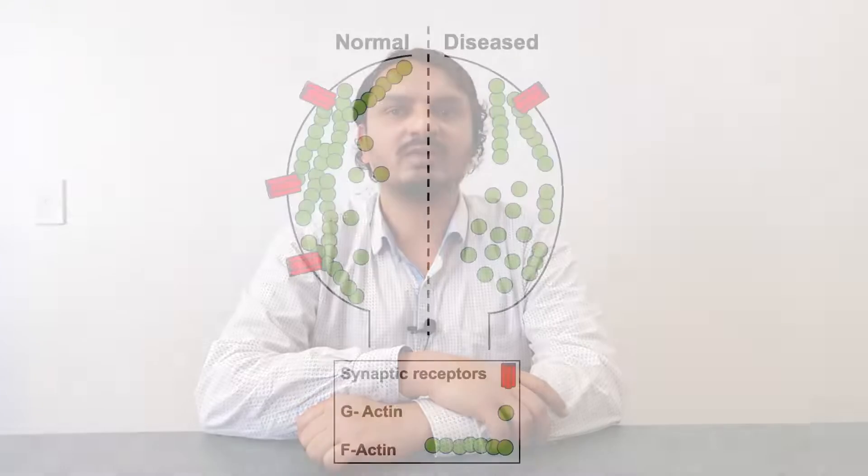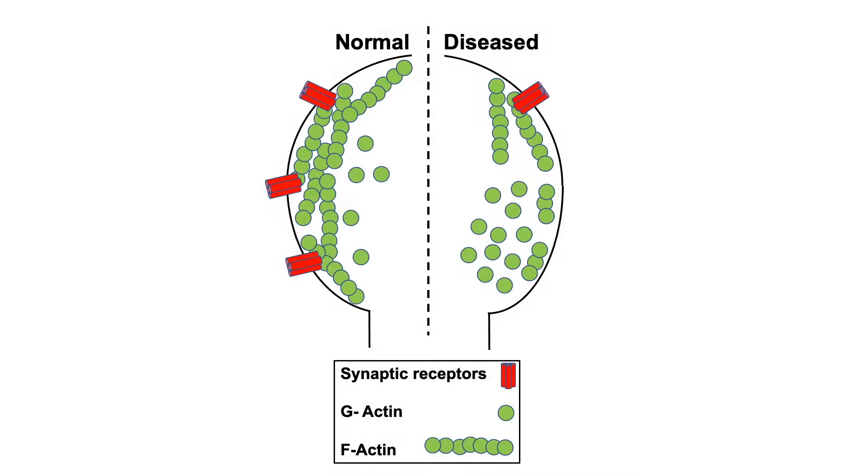At the interneuronal synaptic context, dynamic alterations in F-actin levels are a key regulatory event controlling signaling and plasticity at both pre- and post-synaptic terminals. Not surprisingly, actin dysfunction is linked to several neuropathological states.